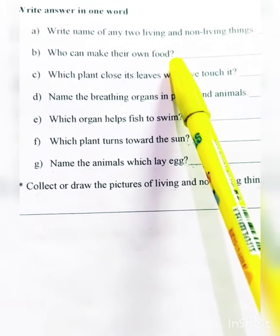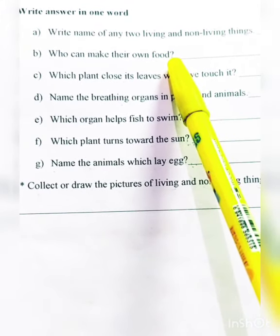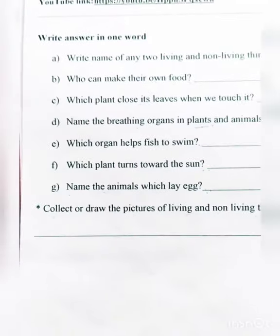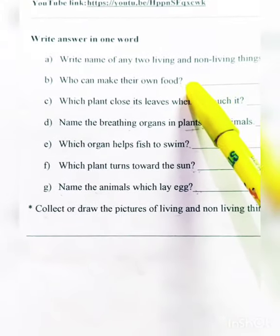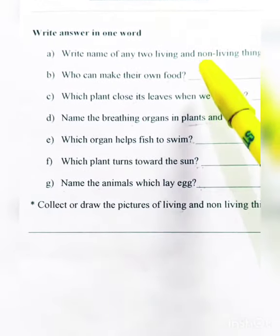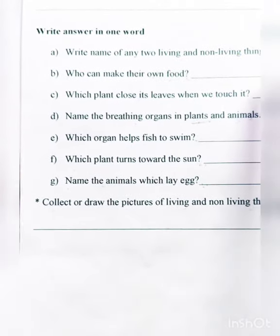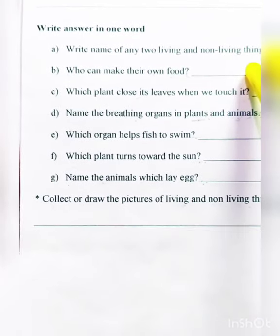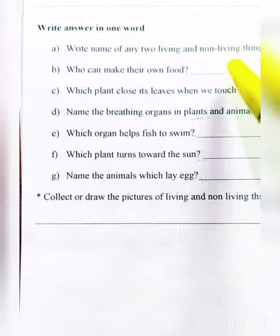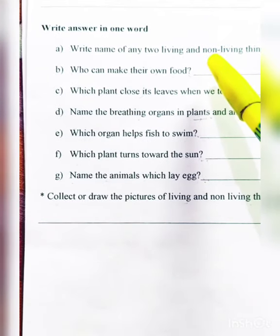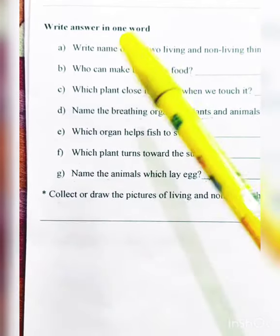A plant is an organism that can make its own food due to the presence of chlorophyll. Plants have chlorophyll which gives them the capacity to absorb heat. Other living things cannot absorb heat from sunlight themselves, so only plants can make their own food.